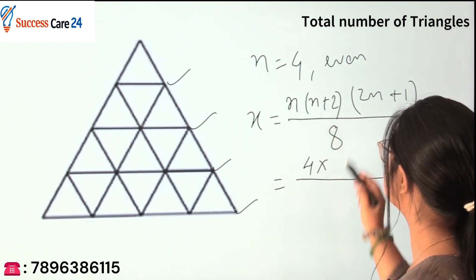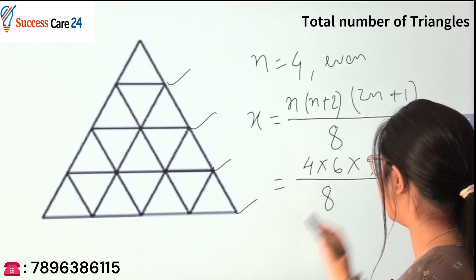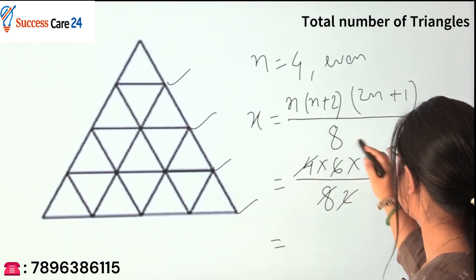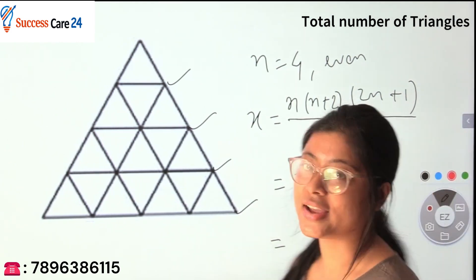Times (2n+1), which is 9, divided by 8. Let's do the calculation and you will get the answer as 27. That means there are 27 triangles in this type of figure.